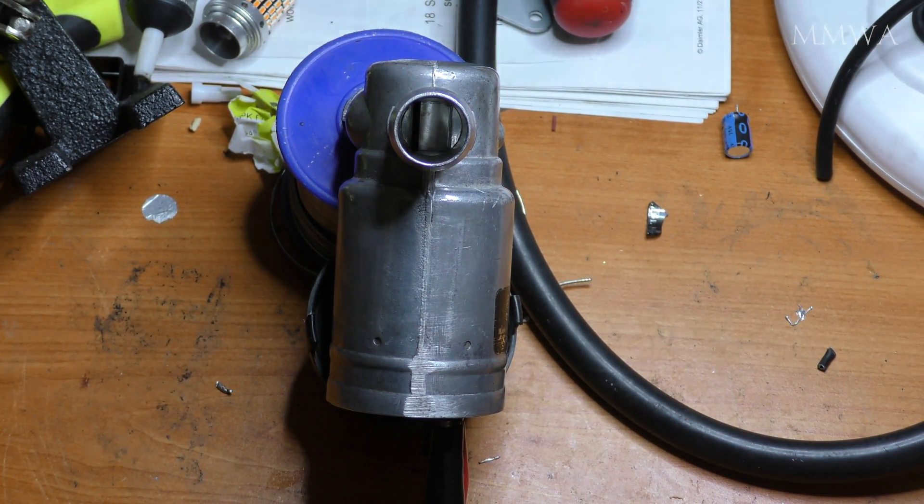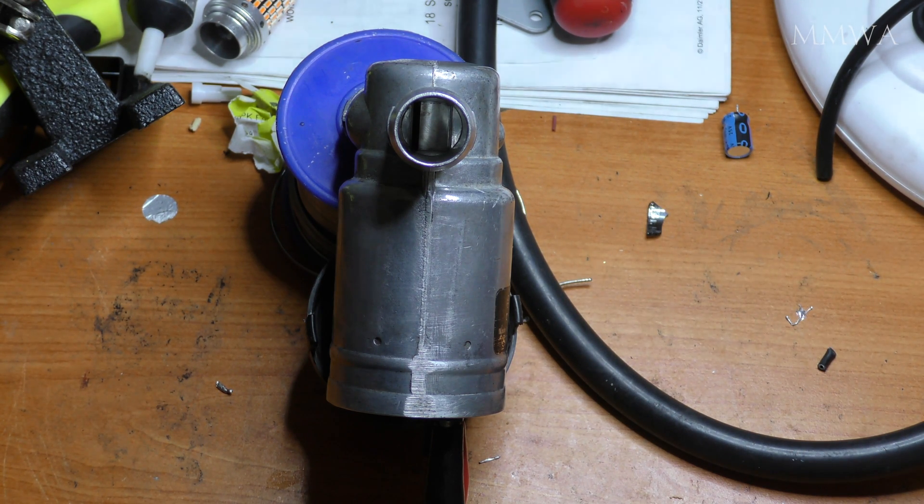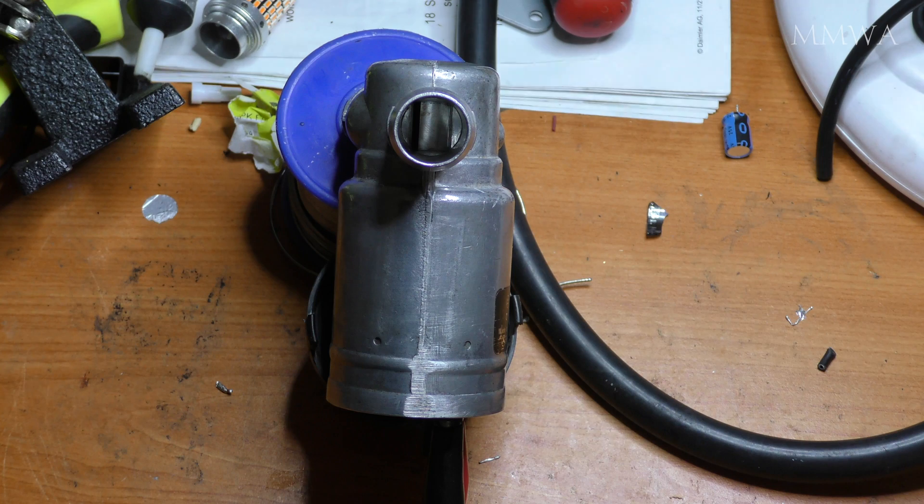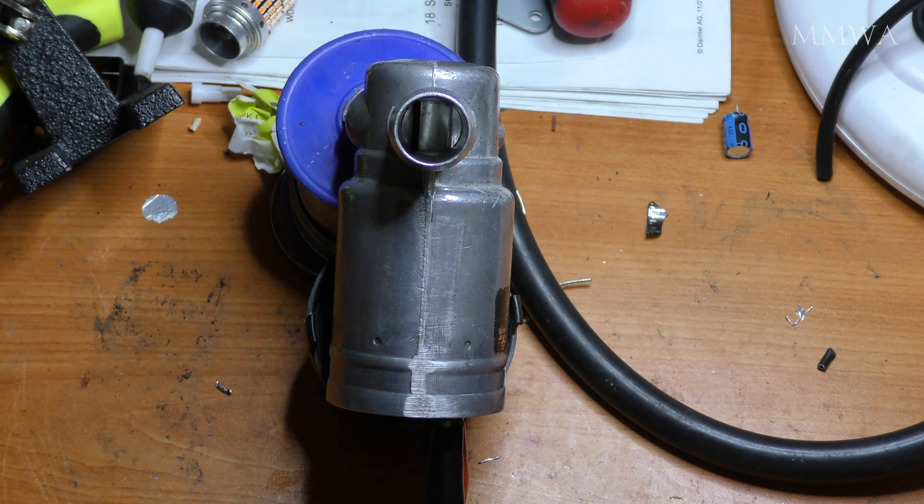This is the idle control valve on the M104.98 series KJ-Tronic engines. I think this valve might also be used on the M103 as well, I'm not sure.